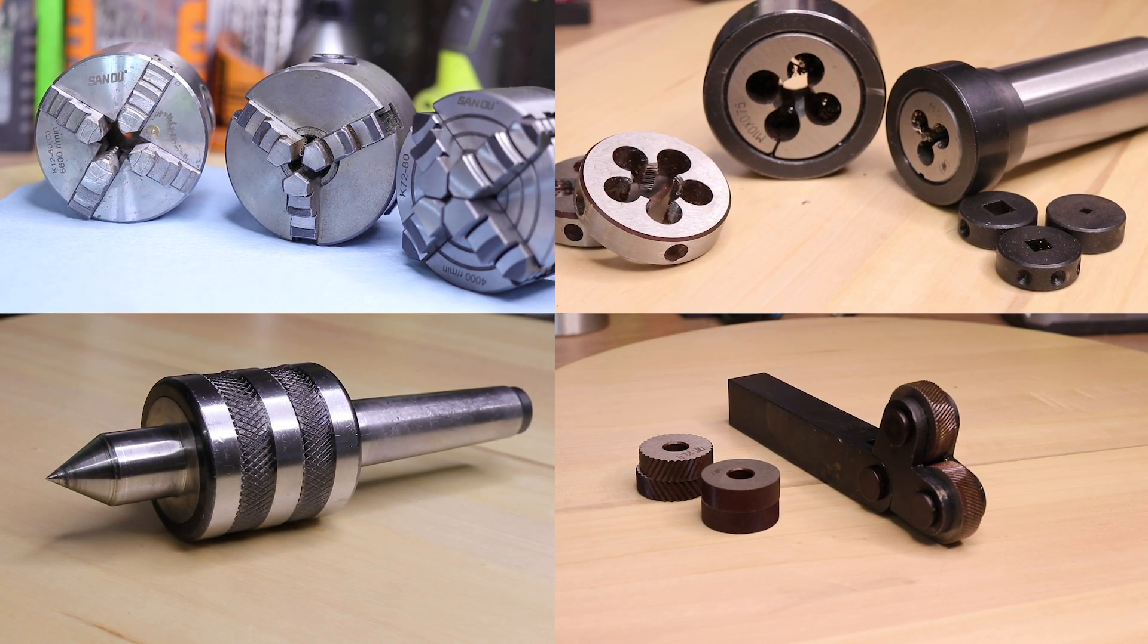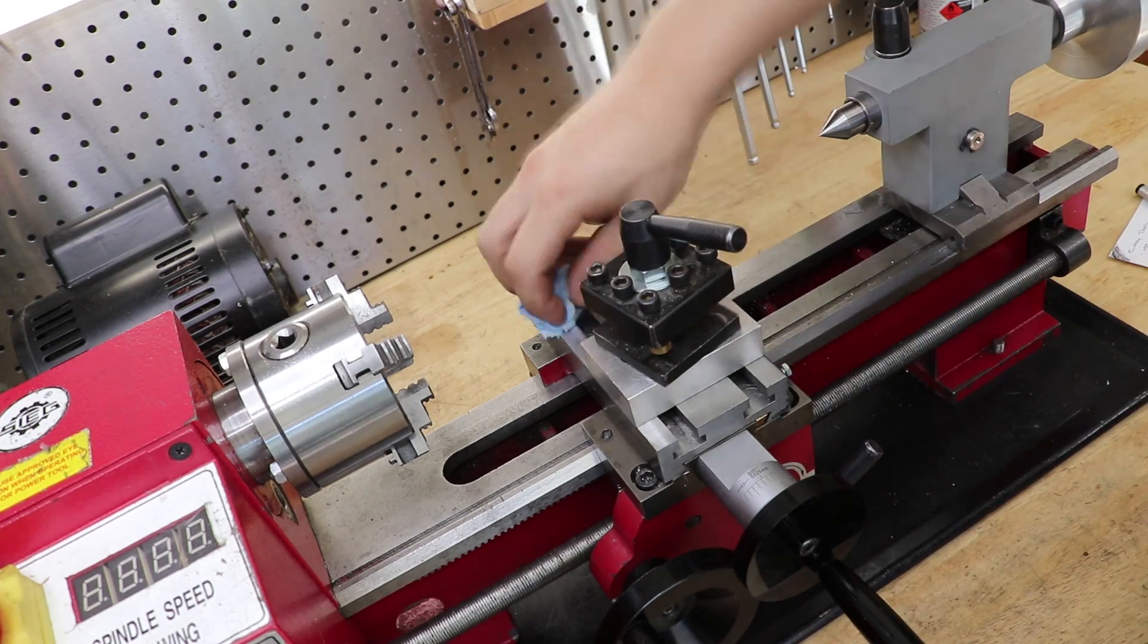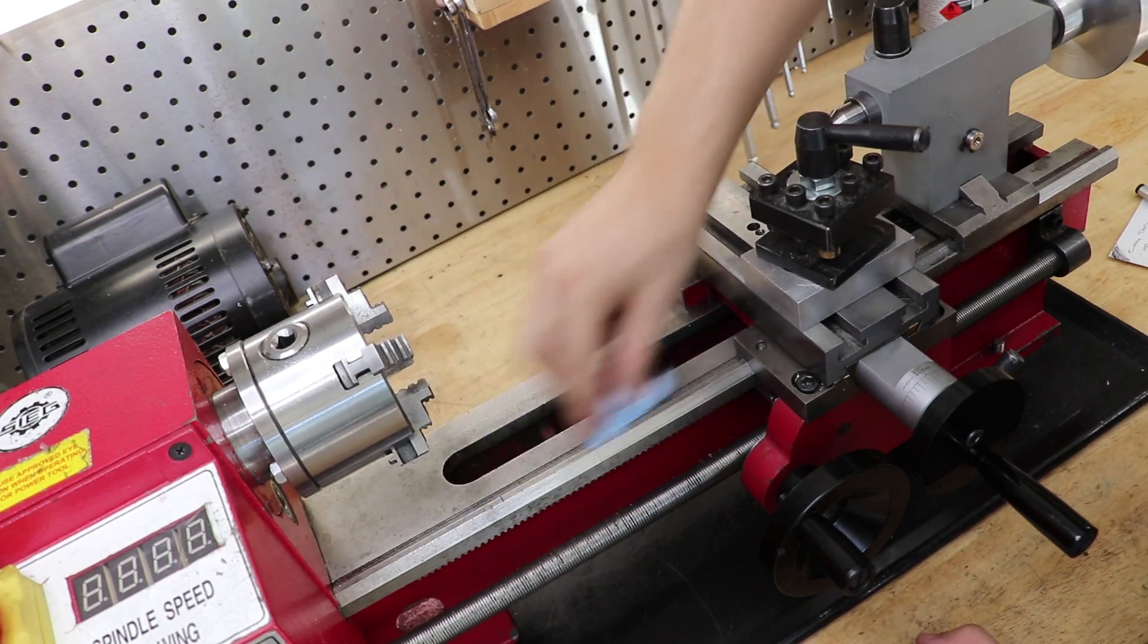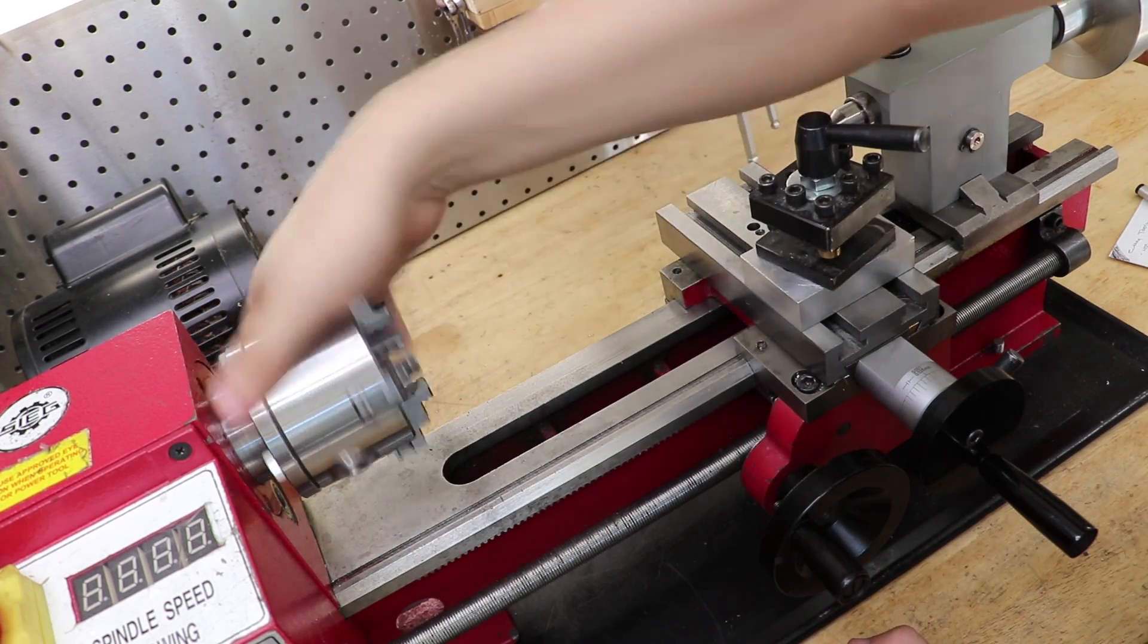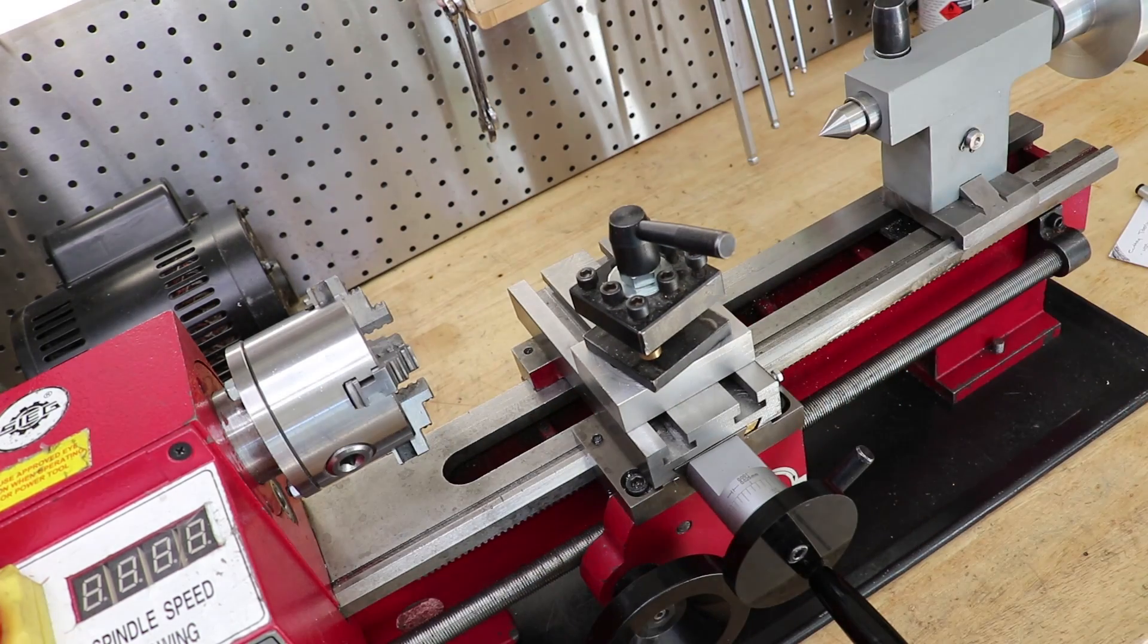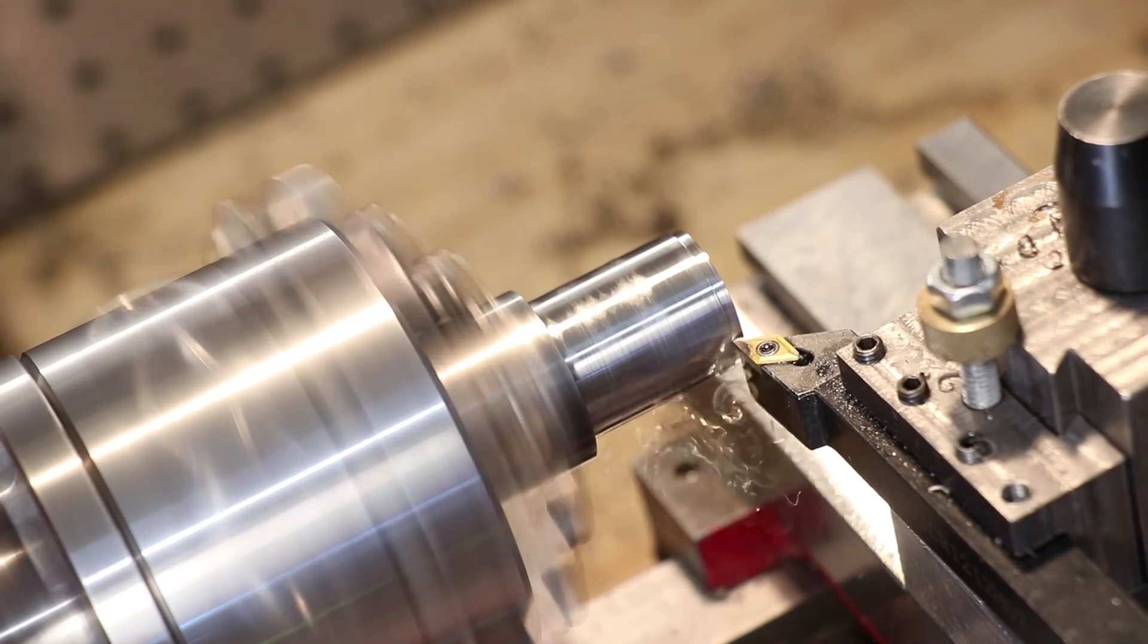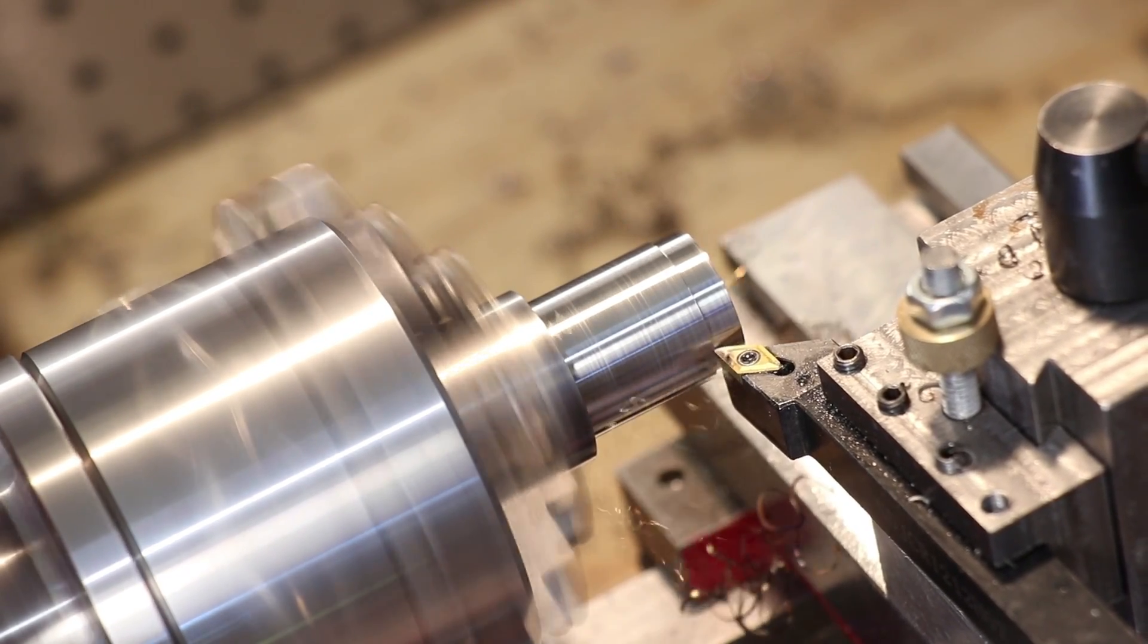So an $800 lathe purchase can easily double to about $1,500 to $1,600 once you factor in the tooling, and whilst you can easily spend that much and even more, I don't think it's a useful metric for actually calculating how much you would need to spend, at least initially. As someone who started out with basically no lathe tools, that wasn't my experience.